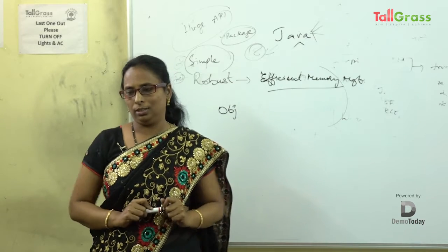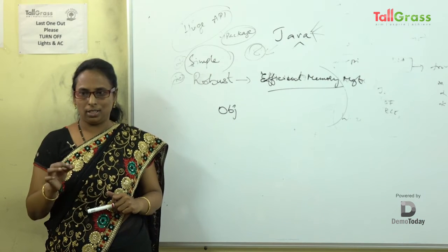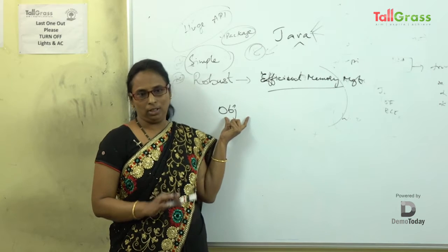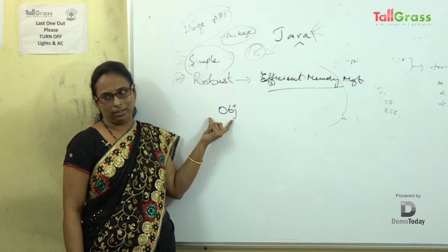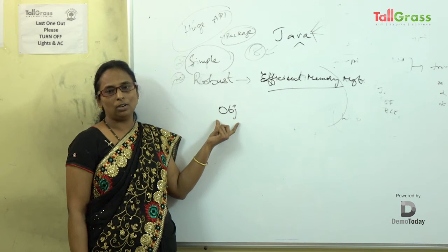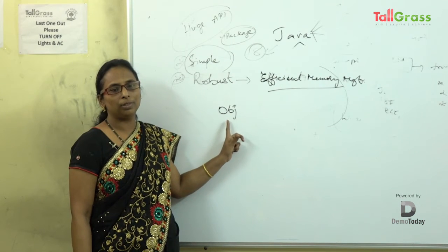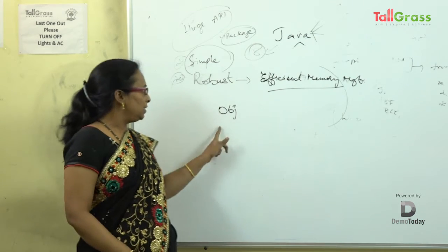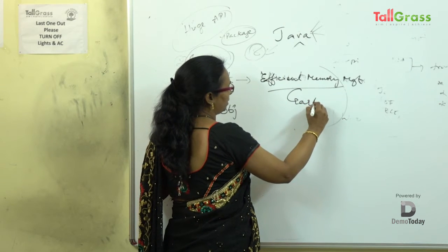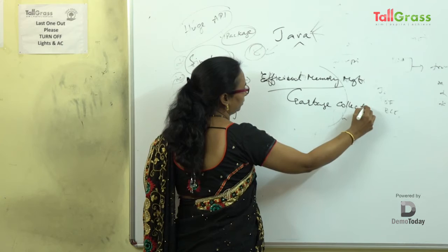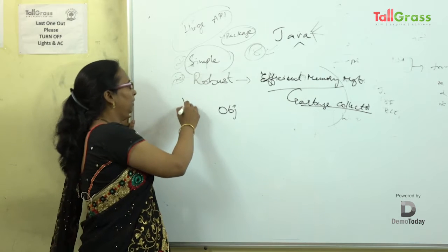If I have an object or a variable and after a long period of time we stop using it, the memory allocated for that object should be reused. To reuse it, we need to deallocate that memory. This is implicitly happening in Java through a concept called the garbage collector. This implicit object available in Java makes Java robust.